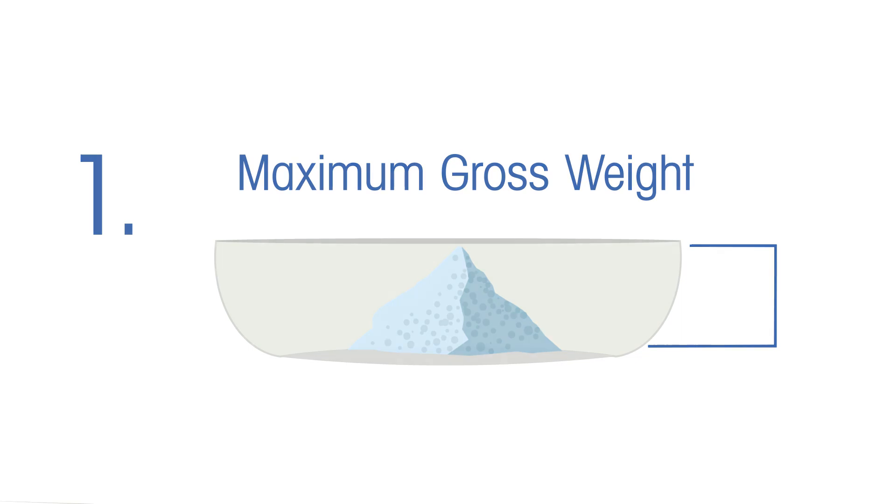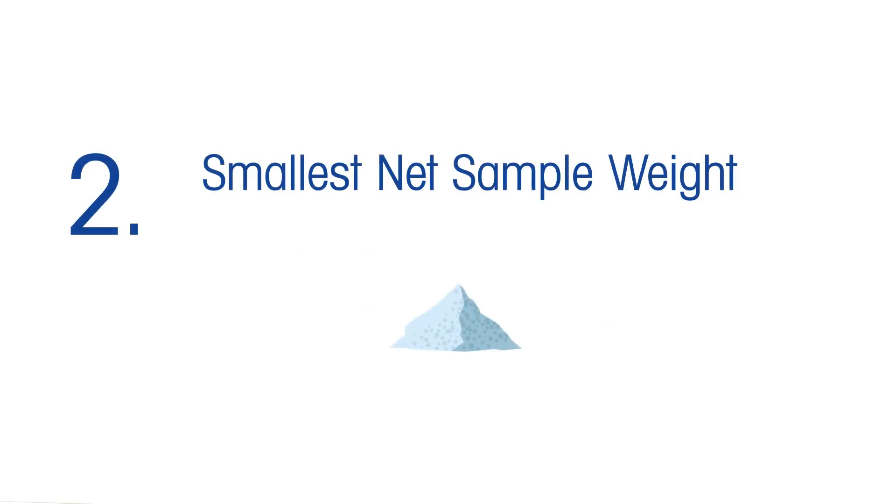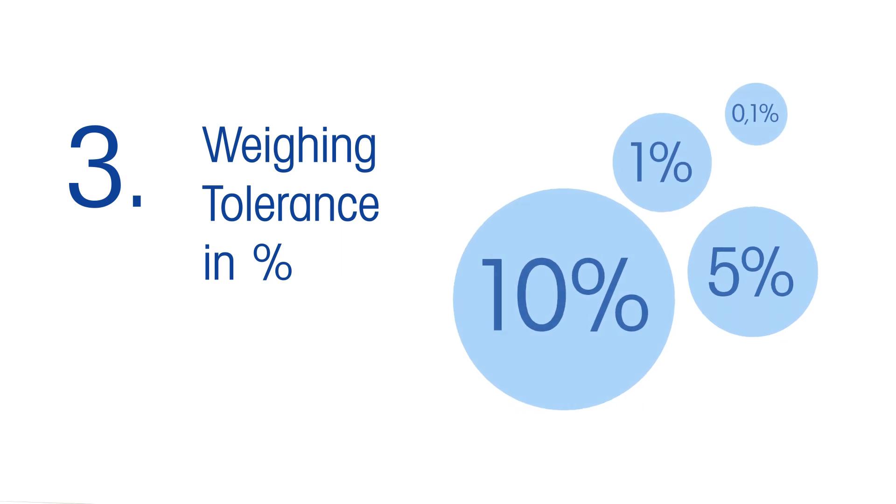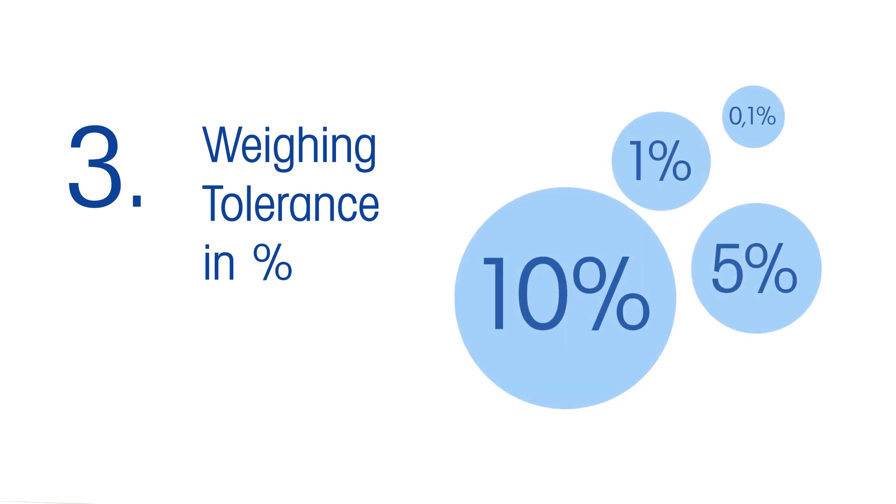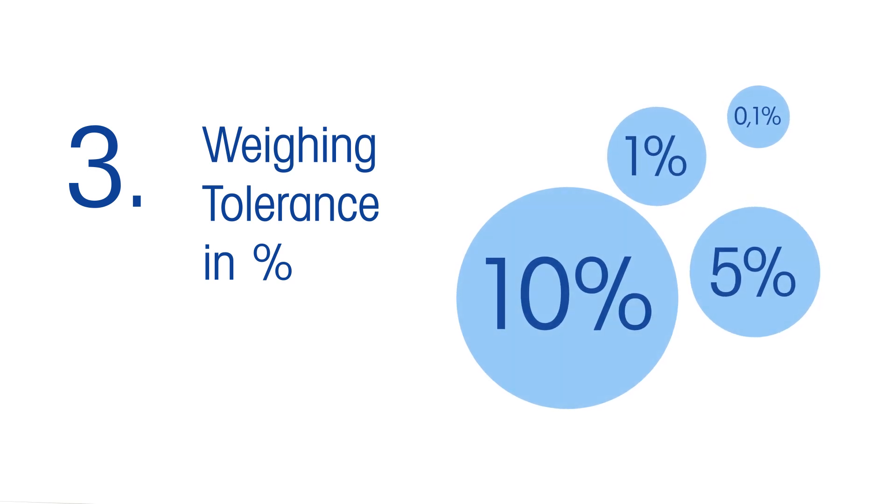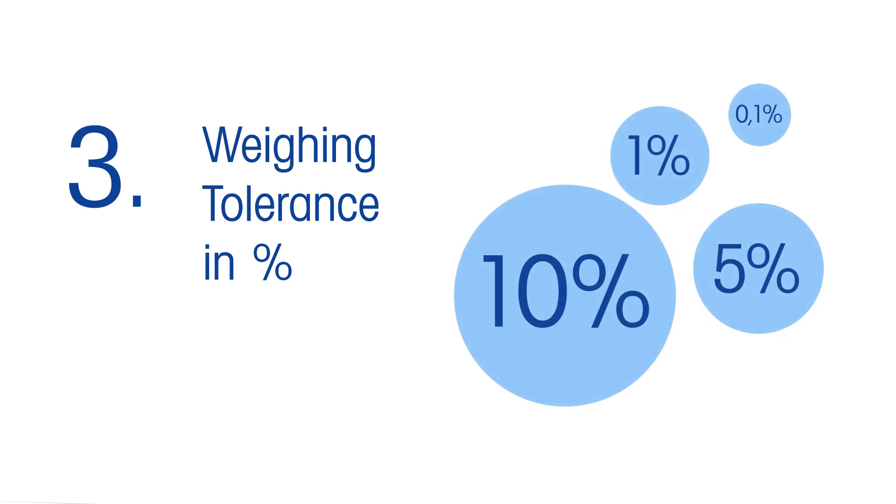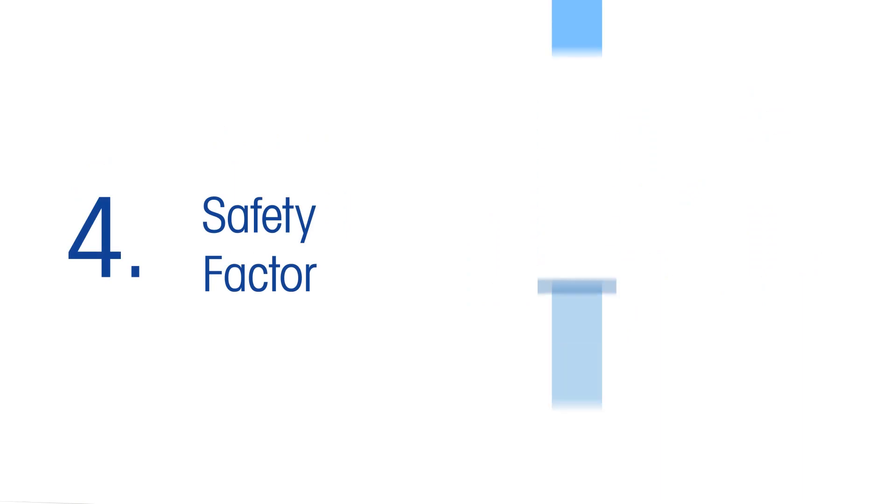The maximum gross weight, the smallest net sample weight, your weighing process tolerance which is defined in a percentage and is the allowable amount of error that your process can withstand, and of course the safety factor.